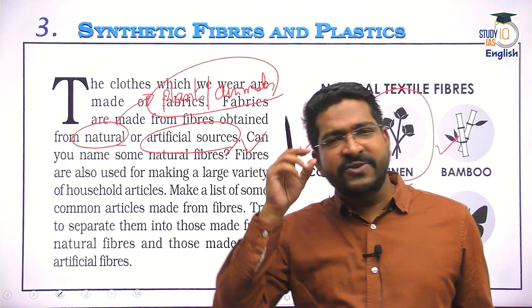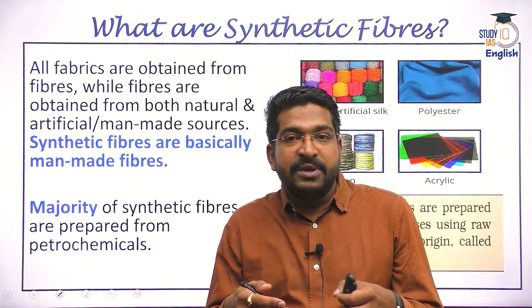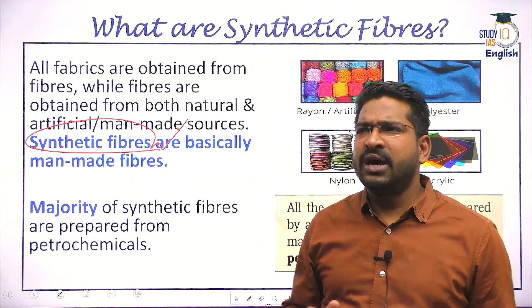First things first — what is the definition of synthetic fiber? A fabric can be made from fibers. Fiber can be natural or artificial. Artificial means manmade. So any kind of manmade fiber is called a synthetic fiber. There are many examples of that in our everyday life — we use so many synthetic fibers. These days, the ropes are made up of synthetic fibers, your clothes are made up of synthetic fibers. If you go to gym, your gym wear, gym shorts, gym t-shirt — they are made from synthetic fibers.